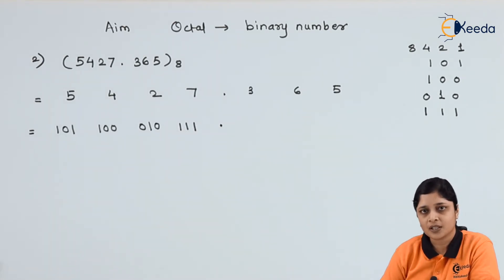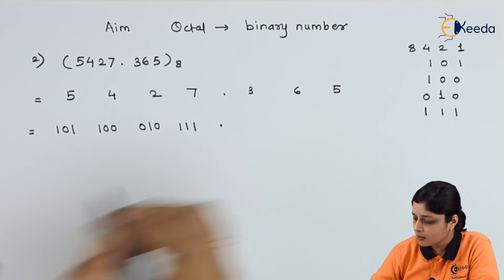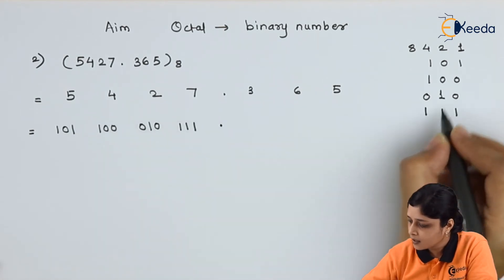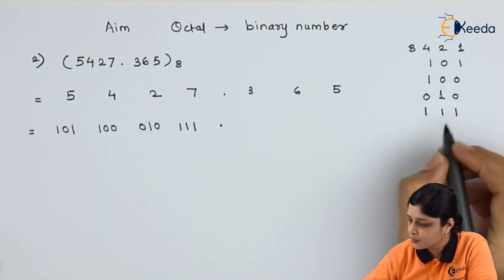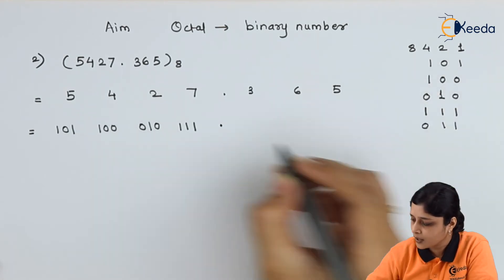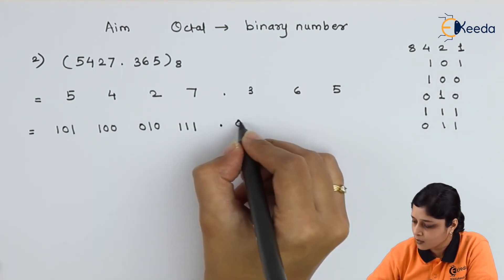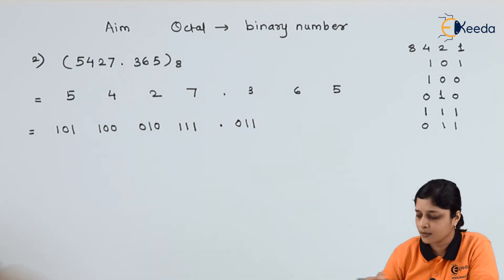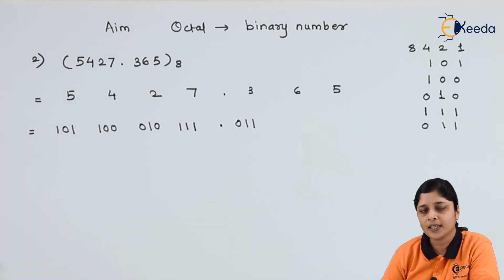Don't forget to mention the decimal point. For 3: 2 plus 1, you will write 0 1 1. You will get the binary for 3.